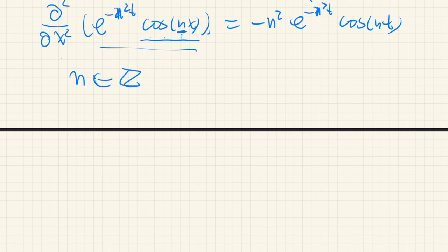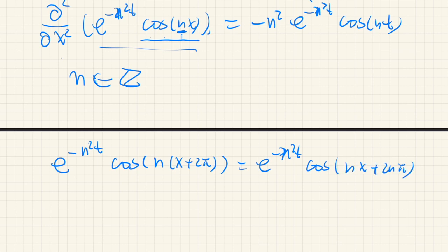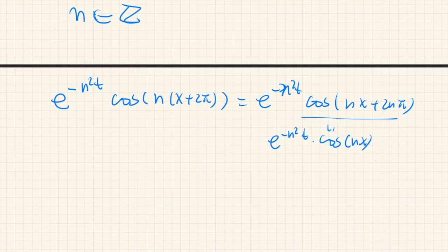Let's see it. So if n is an integer, then e to the negative n squared t and cosine of nx plus 2π is equal to cosine nx plus 2nπ. So this is equal to cosine nx. So the boundary condition is satisfied. The periodic boundary condition is satisfied.